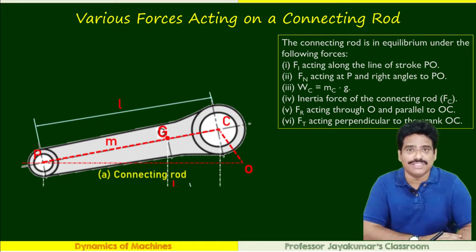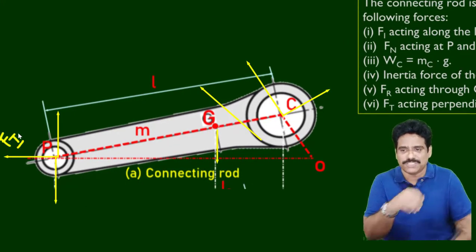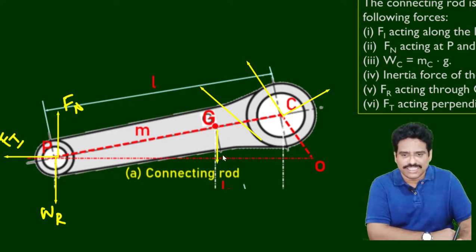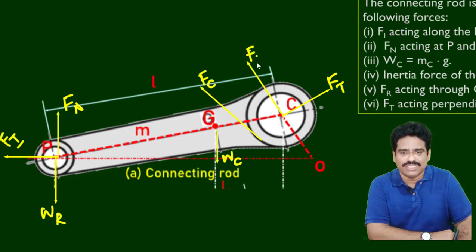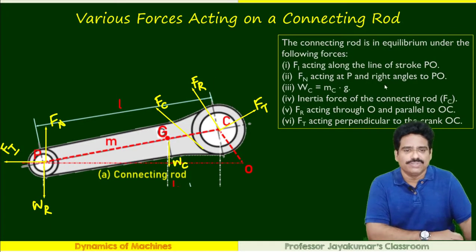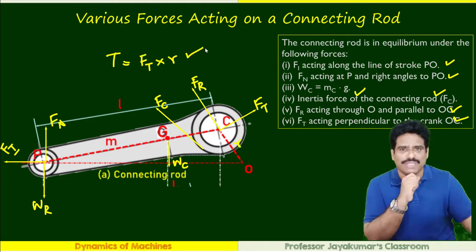The various forces acting on the connecting rod are: the inertia force of the piston, the weight of the reciprocating parts, the normal force acting perpendicular to the cylinder walls, the weight of the connecting rod, and the inertia force of the connecting rod Fc with direction not yet known. Additionally there are two other components — Ft and the radial component acting radially outwards along OC. Our aim is to determine these values by graphical method.